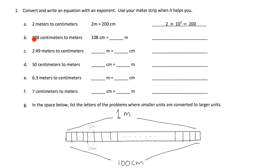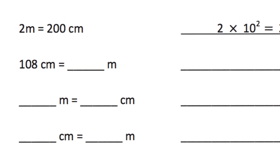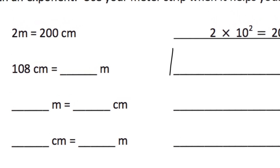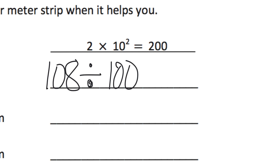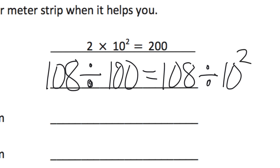Let's do problem B. You have 108 centimeters, and we want to know how many meters that is. Well, we know that if you have 100 centimeters, that equals 1 meter. So that's 100 centimeters divided by 100 gives you 1 meter. So if you have 108, that means we're going to do 108 divided by 100. But that's the same thing as 108 divided by 100 to the second power.